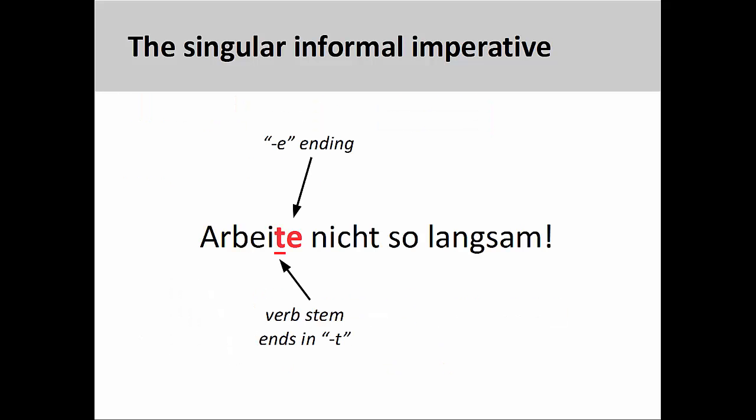In a prior presentation, we saw that the singular informal imperative had some difficult rules to remember. For example, if a verb stem ends in D, T, or IG, we must add an E to the imperative form. Arbeite nicht so langsam. Don't work so slowly.